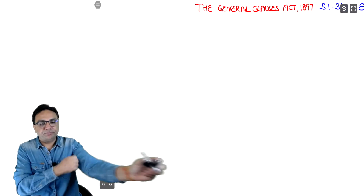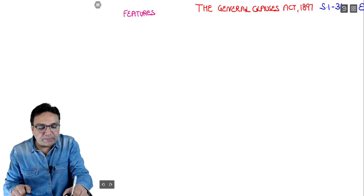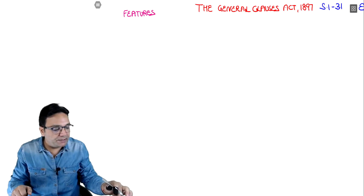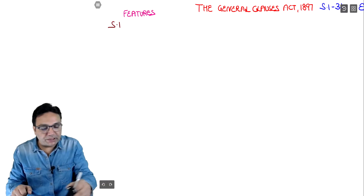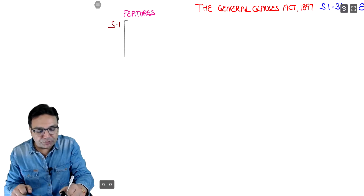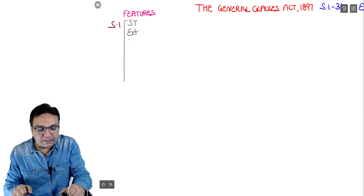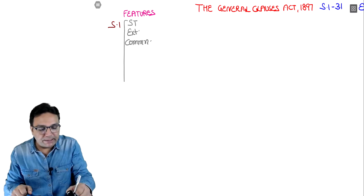Let's start with the basics - the features of this Act. This act was basically made for what purpose? Section 1 covers this. In section 1, there are basically 3 things: number 1 is your short title, number 2 is extent, and number 3 is commencement - meaning from which date this act started.